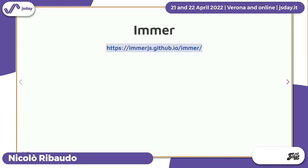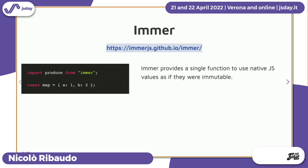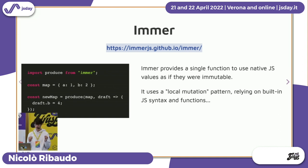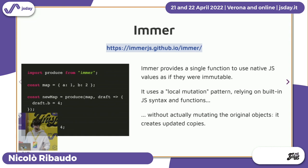Another quite popular library is Immer. Immer takes a completely different approach: it does not try to divide the world between mutable and immutable data structures. It uses the built-in JavaScript objects and provides a function to update them in an immutable way. By putting all the mutations in a single place, Immer records those mutations and applies them on the original object to create a new one, without updating the original object.